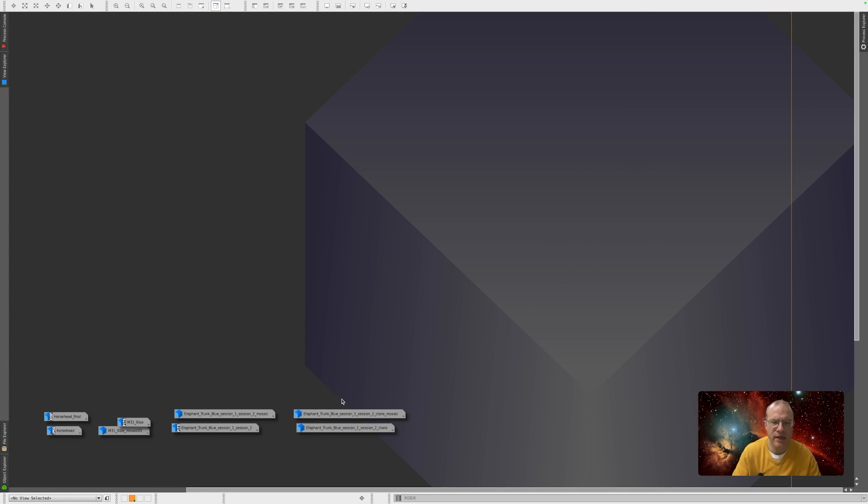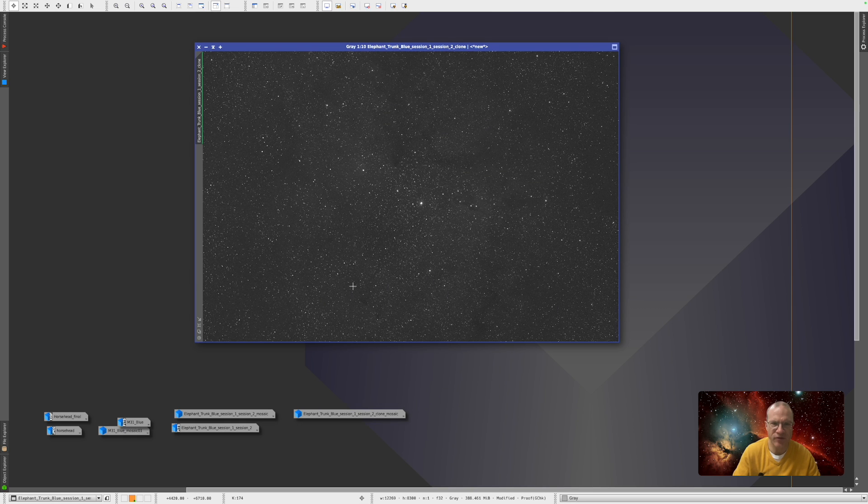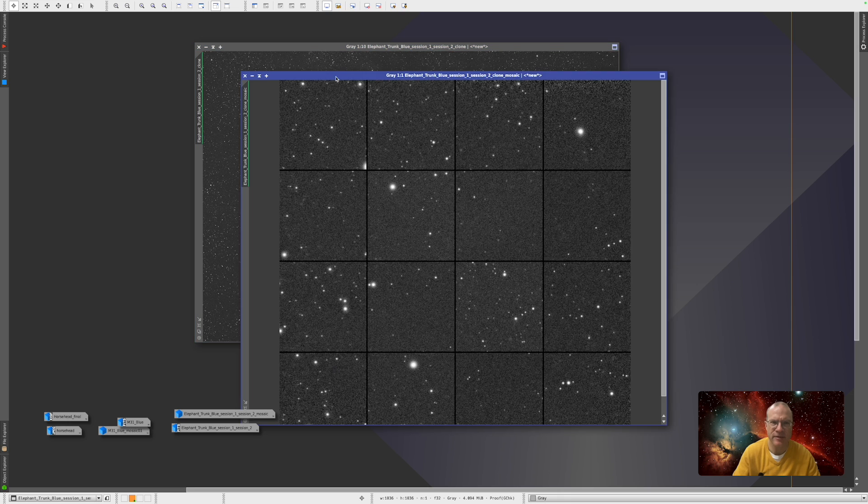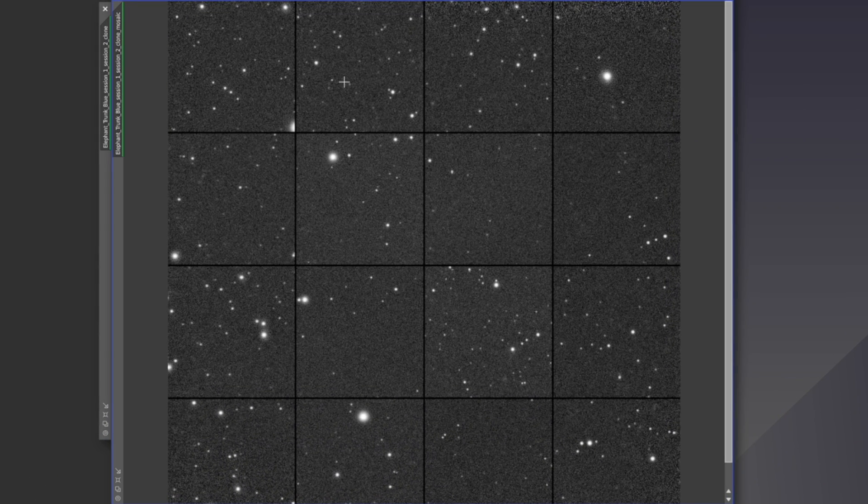But what I want to show you now is just these pictures, just a blue channel, no gradient removal, nothing. Just BXT over it. So this is the picture with BXT applied, and now the aberration inspector again.